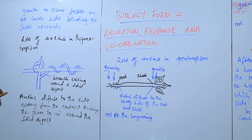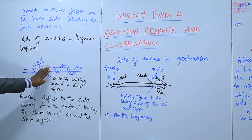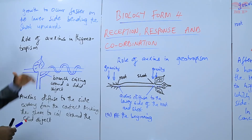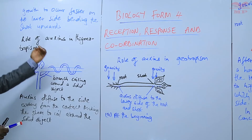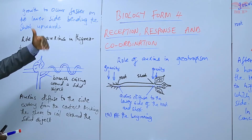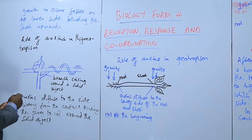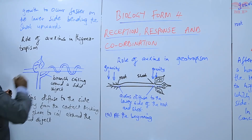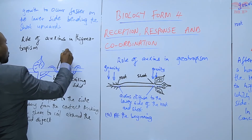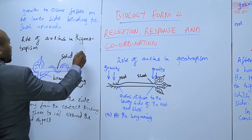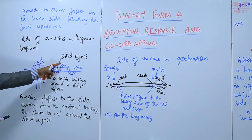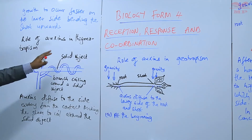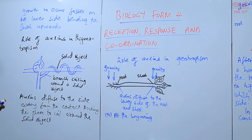It is thigmotropism because it is caused by contact. The stem comes into contact with the solid object and the auxins diffuse to the side away from the contact, so the other side grows faster and then it coils around the solid object. This is what you call thigmotropism or haptotropism.